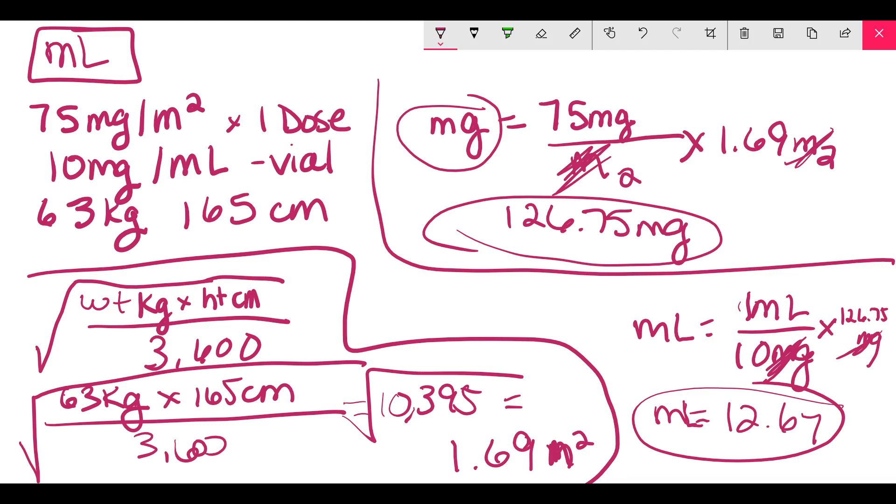So if you did 12.7, that's the correct answer. You can do 12.67, but usually it's just 12.7 mLs, a one-time dose that you're going to give.